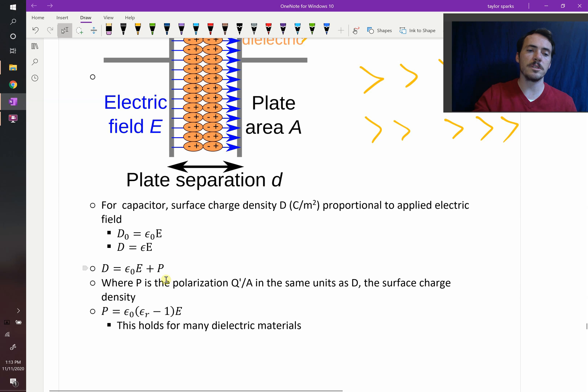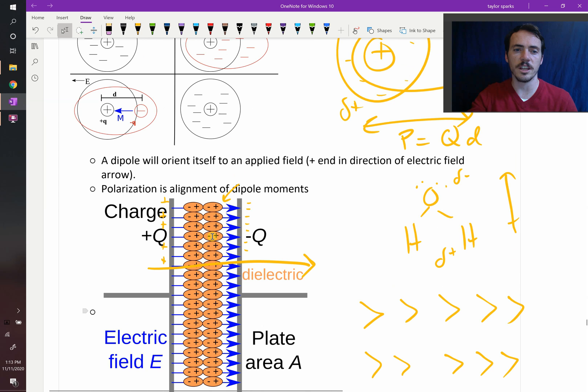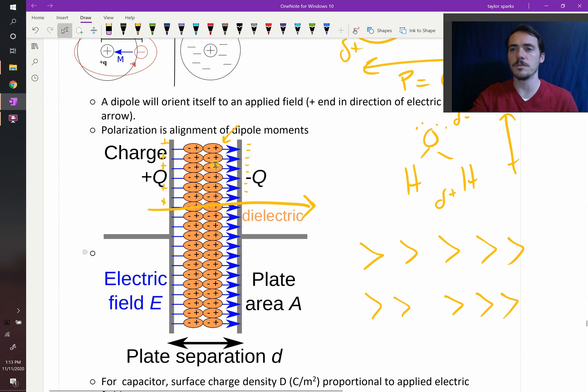And for many materials, we can then solve for polarization as being the permittivity of free space multiplied by the quantity of our dielectric constant for our material, εᵣ or epsilon R, minus 1, that quantity multiplied by the electric field. So that's going to hold for a lot of materials. And this is the origin of getting additional charge along the surface of these plates because you have the alignment of these molecules or atoms in electric fields.